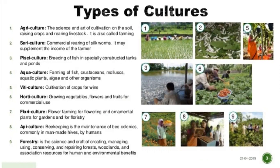Apiculture is beekeeping — the maintenance of bee colonies, commonly in man-made hives. Forestry is the science and craft of creating, managing, using, conserving, and repairing forests, woodlands, and their associated resources for human and environmental benefits. So all these types of culture involve cultivation, rearing of silkworms, breeding of fish, farming of fish, cultivation of crops for vines, and beekeeping — these are the types of culture.